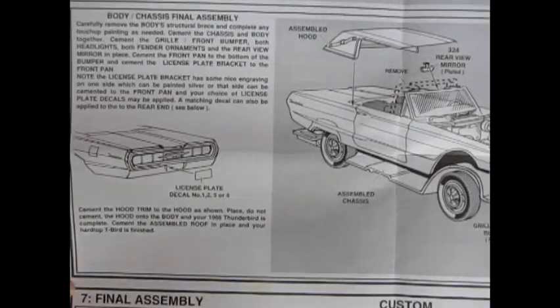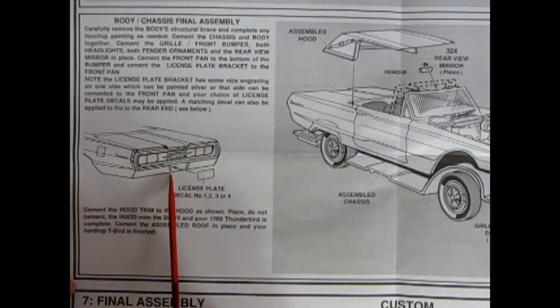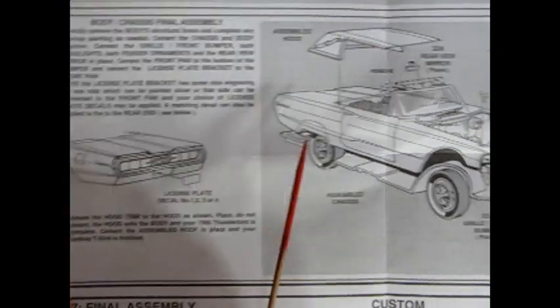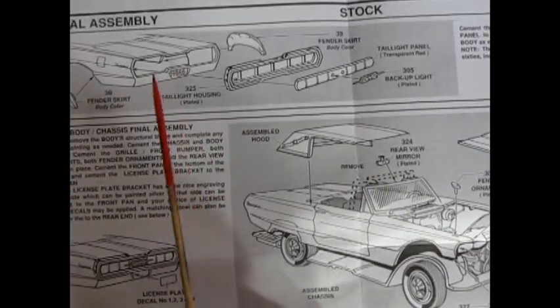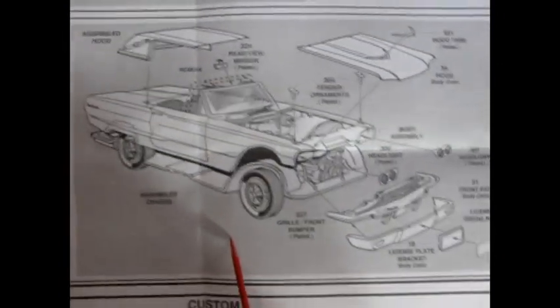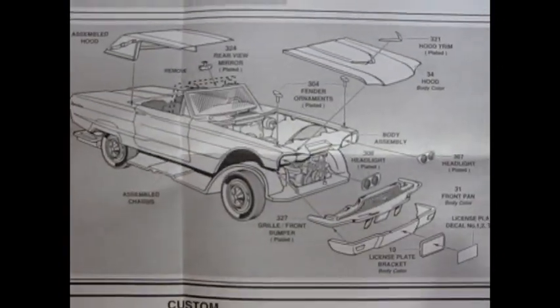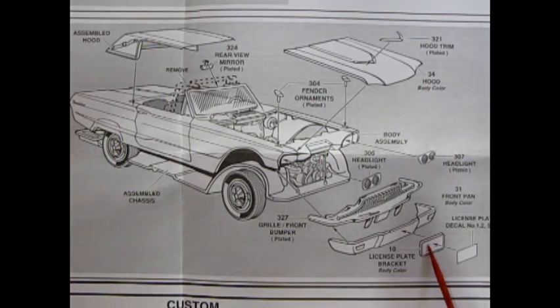And then here this is the stock assembly of course. You're getting a license plate decal going on to the back there. You'd have to scrape off the molded on 1966. It's in there. Okay. And then we get into this panel here where it shows the stock car going all together. There's a license plate decal here that glues into a license plate frame which goes on your front body pan.